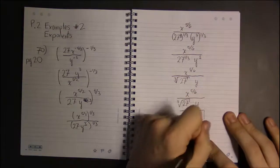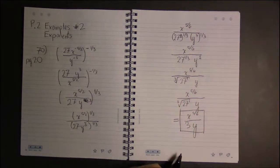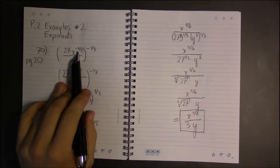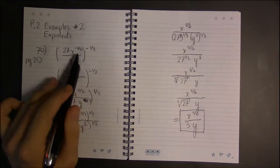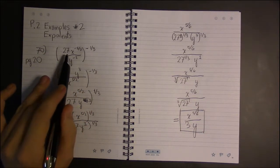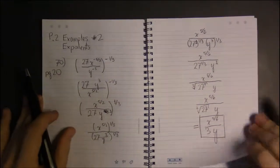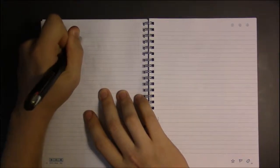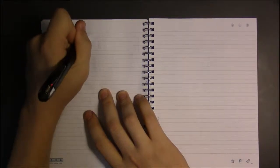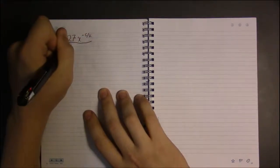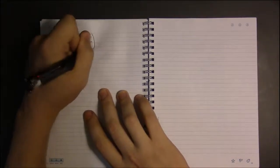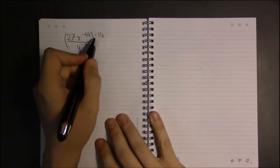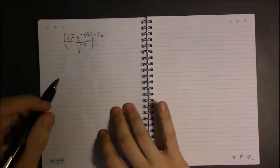And that's our answer. Now, how would this have looked if we did it the other way — if we didn't worry about negatives initially and started distributing right away? Let's look at that. Starting back at 27x to the minus five-halves over y to the minus three, to the minus one-third.